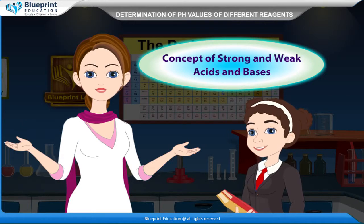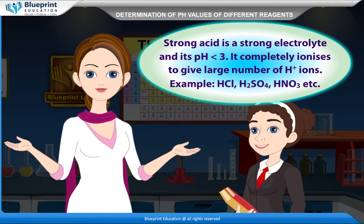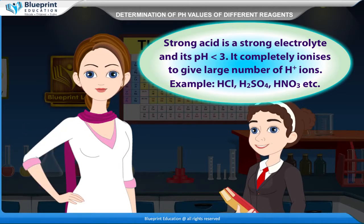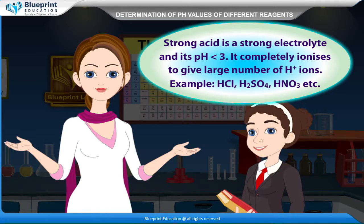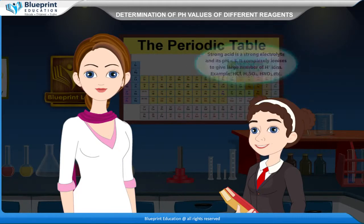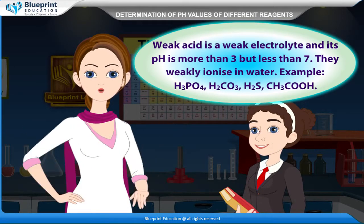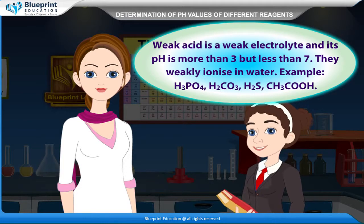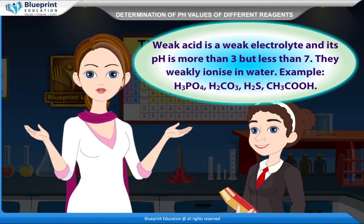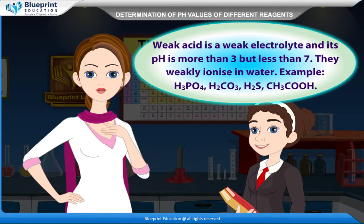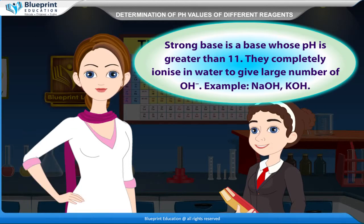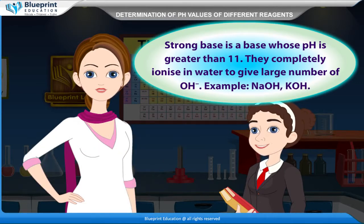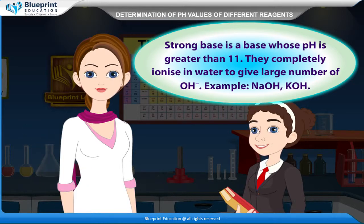Concept of strong and weak acids and bases. A strong acid is a strong electrolyte with pH less than 3; it completely ionizes to give a large number of H⁺ ions — examples include HCl, H2SO4, and HNO3. A weak acid is a weak electrolyte with pH more than 3 but less than 7; examples include H3PO4, H2CO3, H2S, and CH3COOH. A strong base has a pH greater than 11 and completely ionizes in water to give a large number of OH⁻ ions — examples include NaOH and KOH.